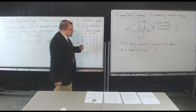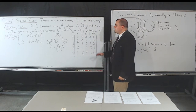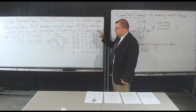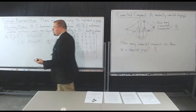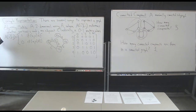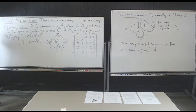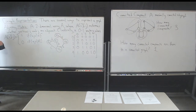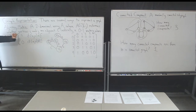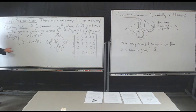We're going to shift gears ever so slightly — we're still talking about graphs, but now we're going to talk about representations of graphs. I've shown you all these nice structures involving graphs and all these properties. How can we actually represent these from a data structure standpoint? I didn't give you an ADT; I find that an ADT can be so broad with a graph that I'm just going to avoid doing that here.